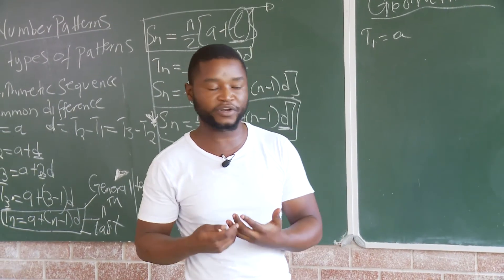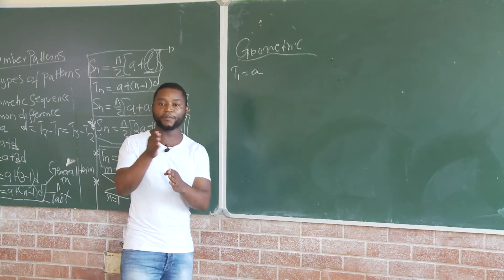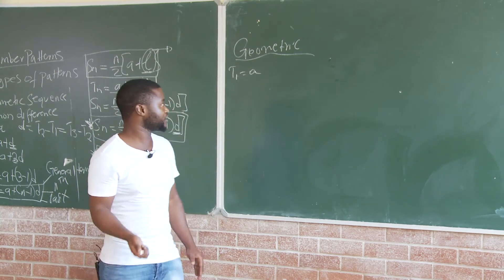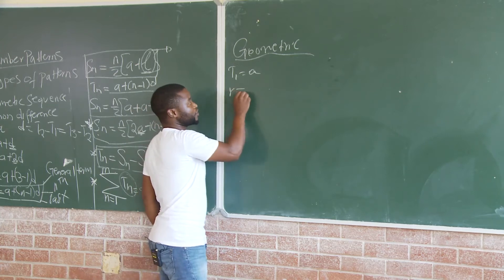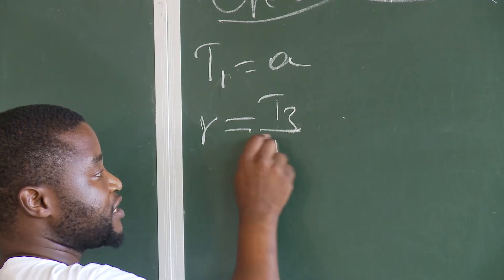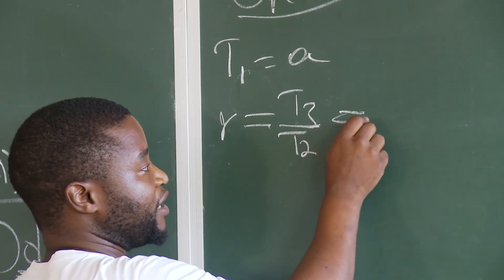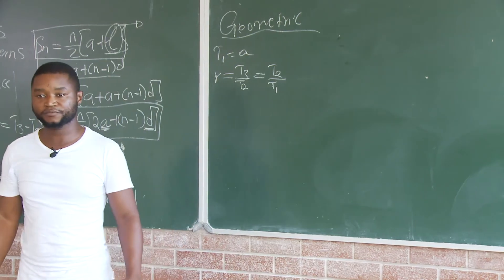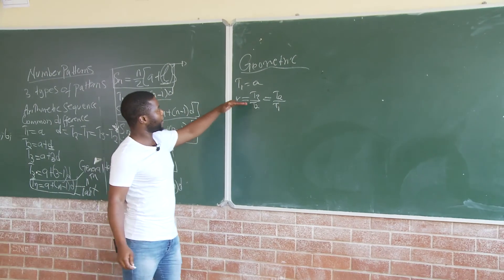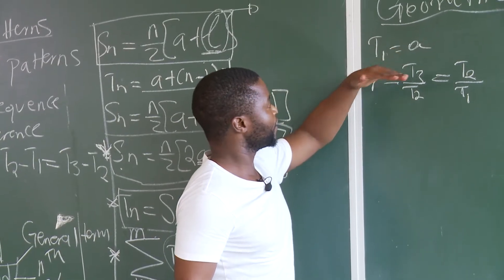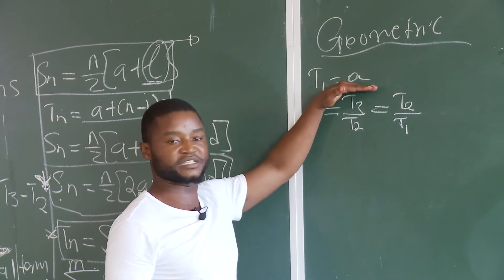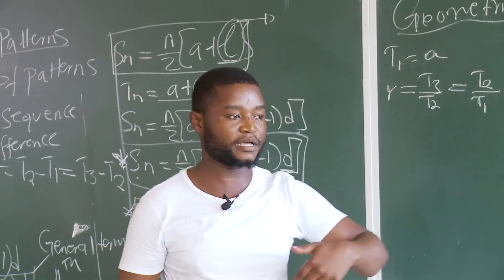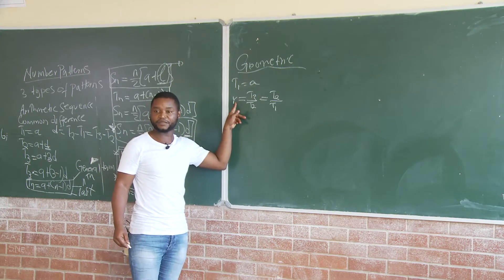How do we identify the common ratio? The common ratio — remember that there are terms that are consecutive. The common ratio is T3 divided by T2, which also should be equal to T2 divided by T1. So, if we want to go from the first term generally towards the second term, we multiply the common ratio.